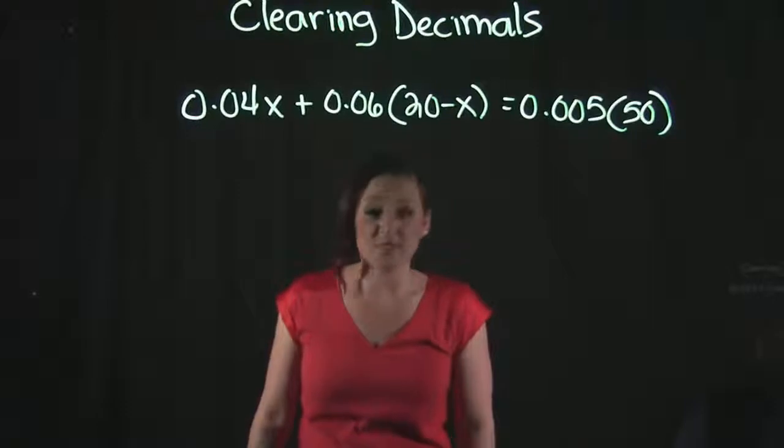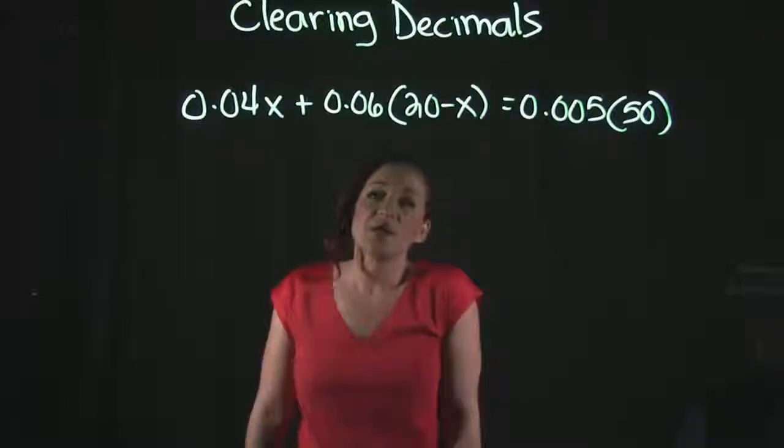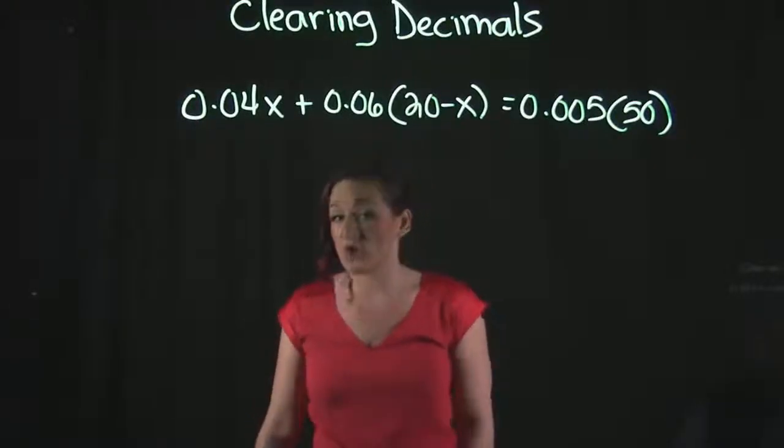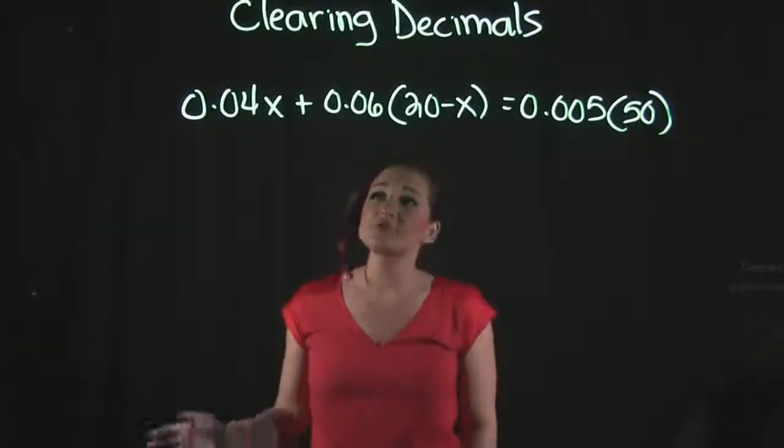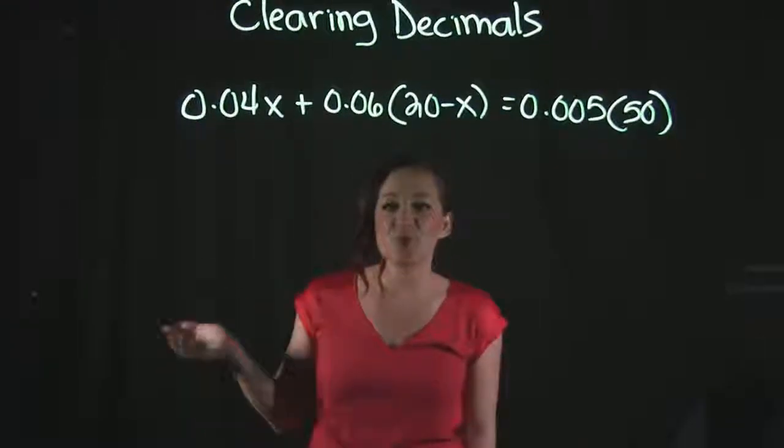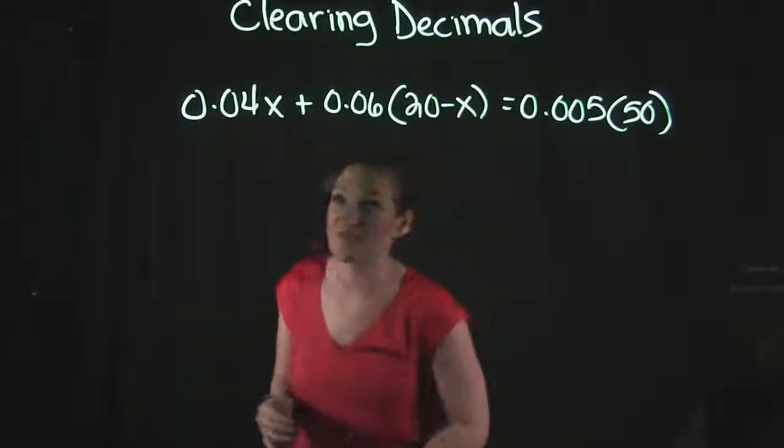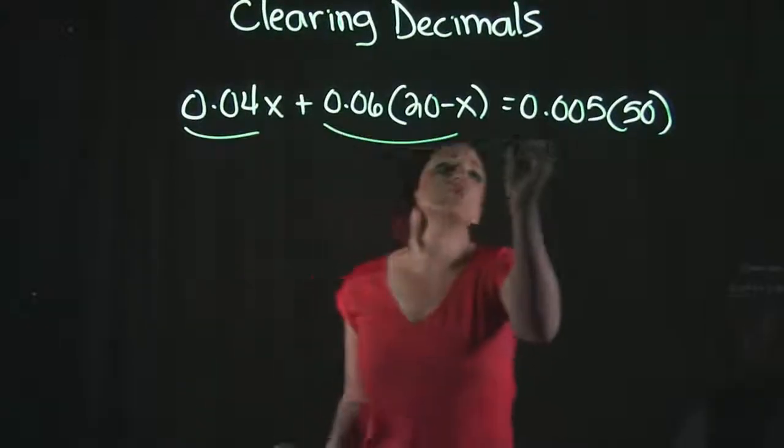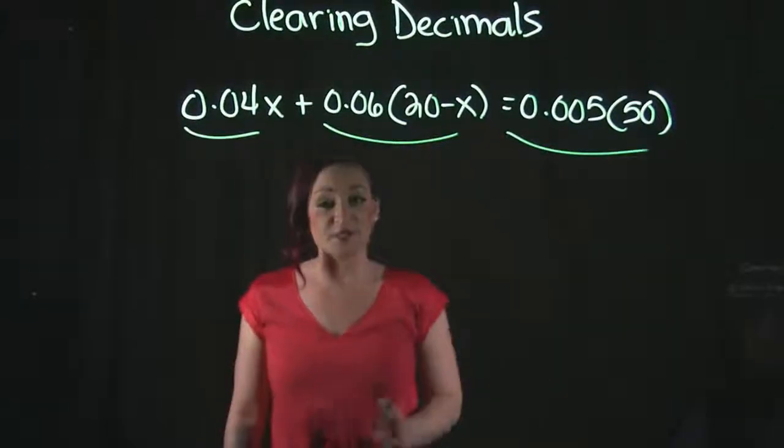So there is a way that we can get rid of the decimals, and that method is called clearing decimals. In order to clear decimals, what we want to do is look at each term that we have, and find which term has the most number of decimal place values. So when I'm looking at this equation, I have one, two, three terms.